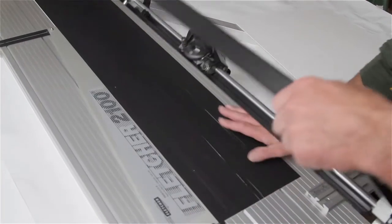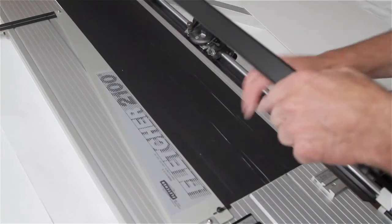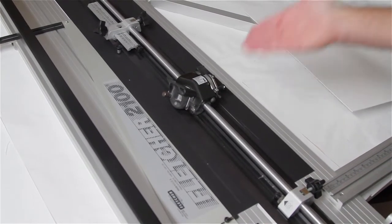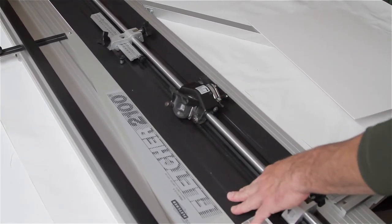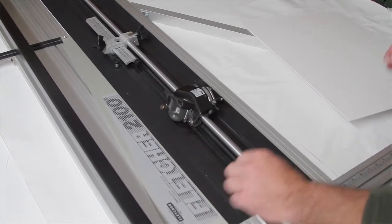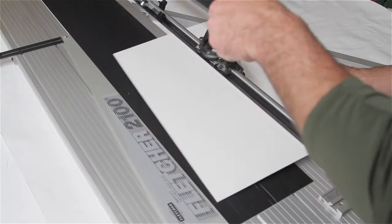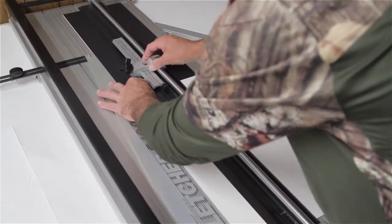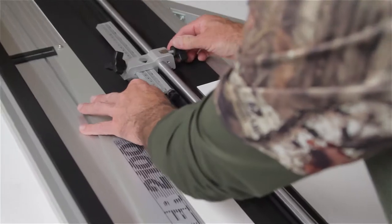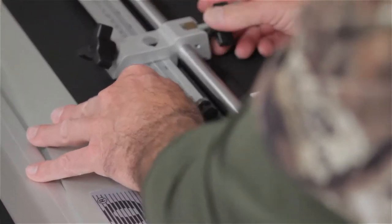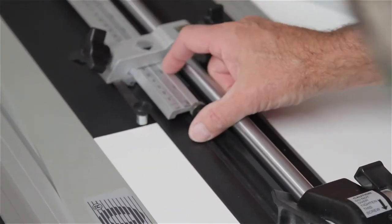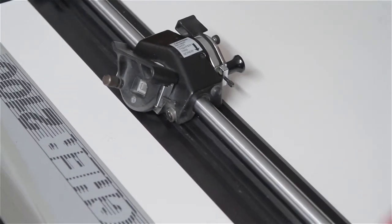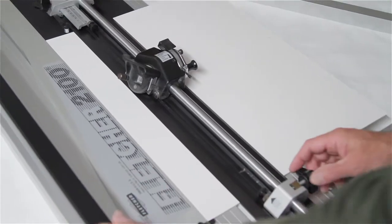Whenever you're cutting, you want to make sure you have a piece of board on the backside. It allows your cutter to go through the mat into the other board and you'll get a much nicer, cleaner cut that way. I always double-check my dimensions - two and three-eighths, two and three-eighths, and two and three-eighths. That's what we want.